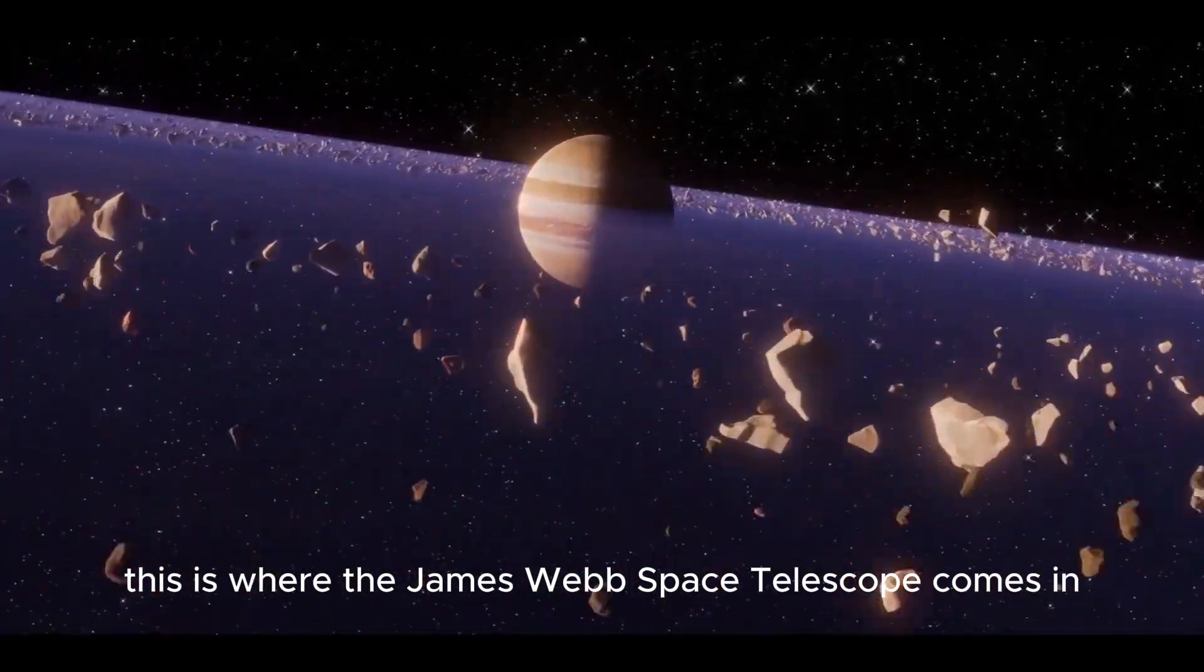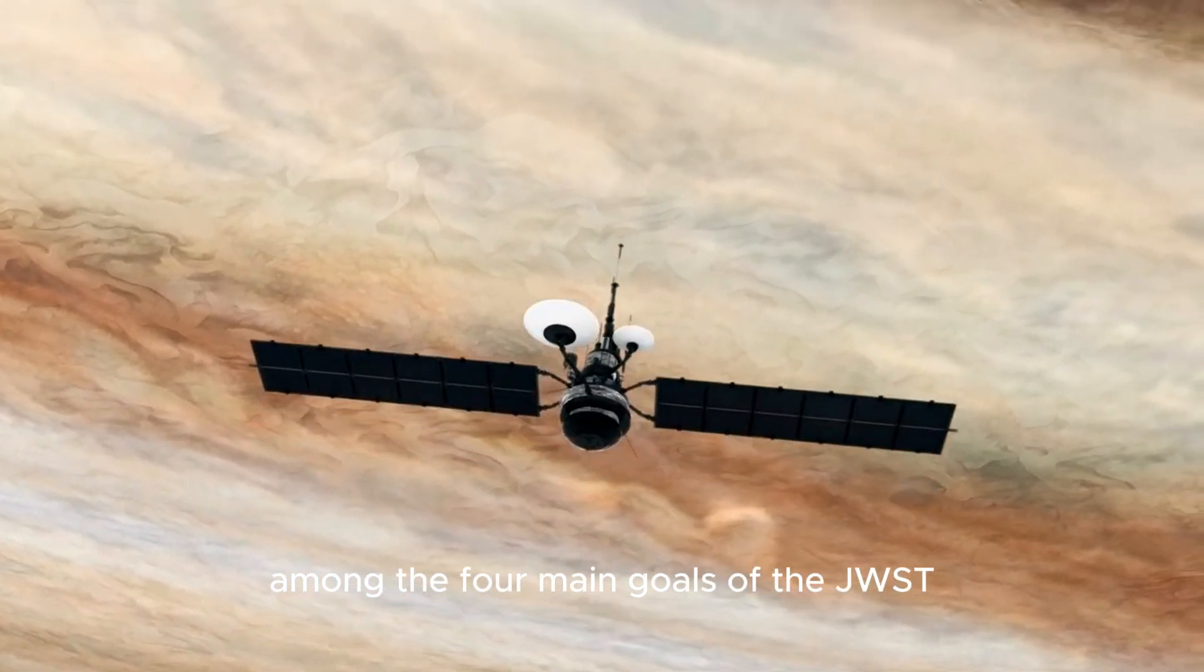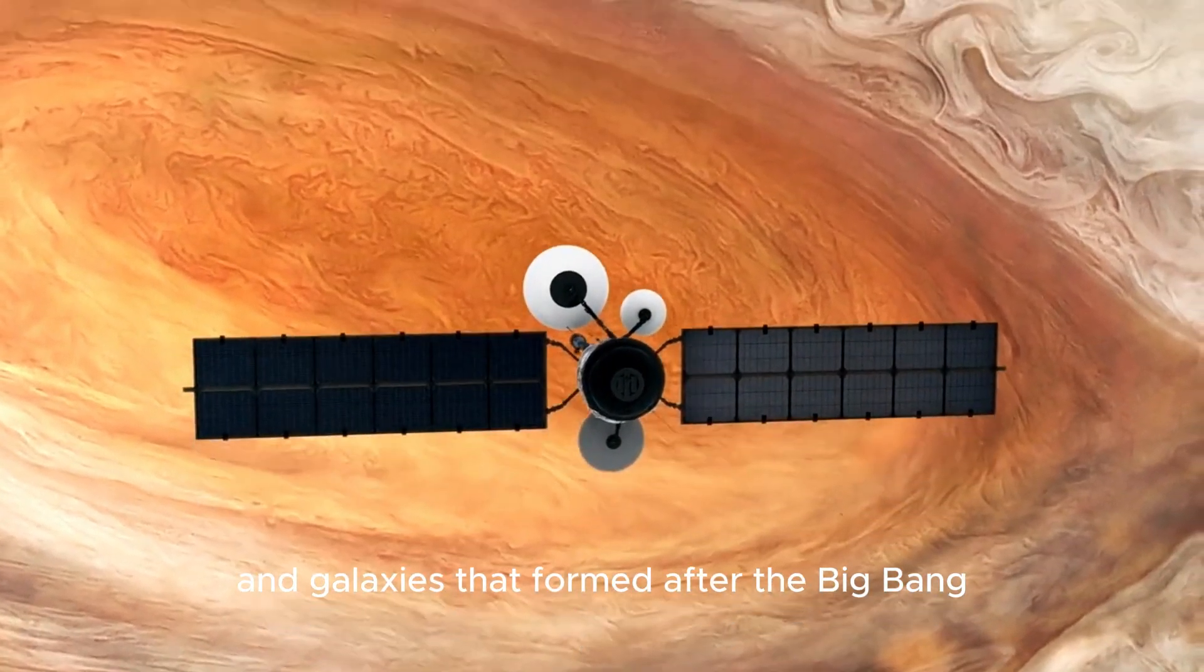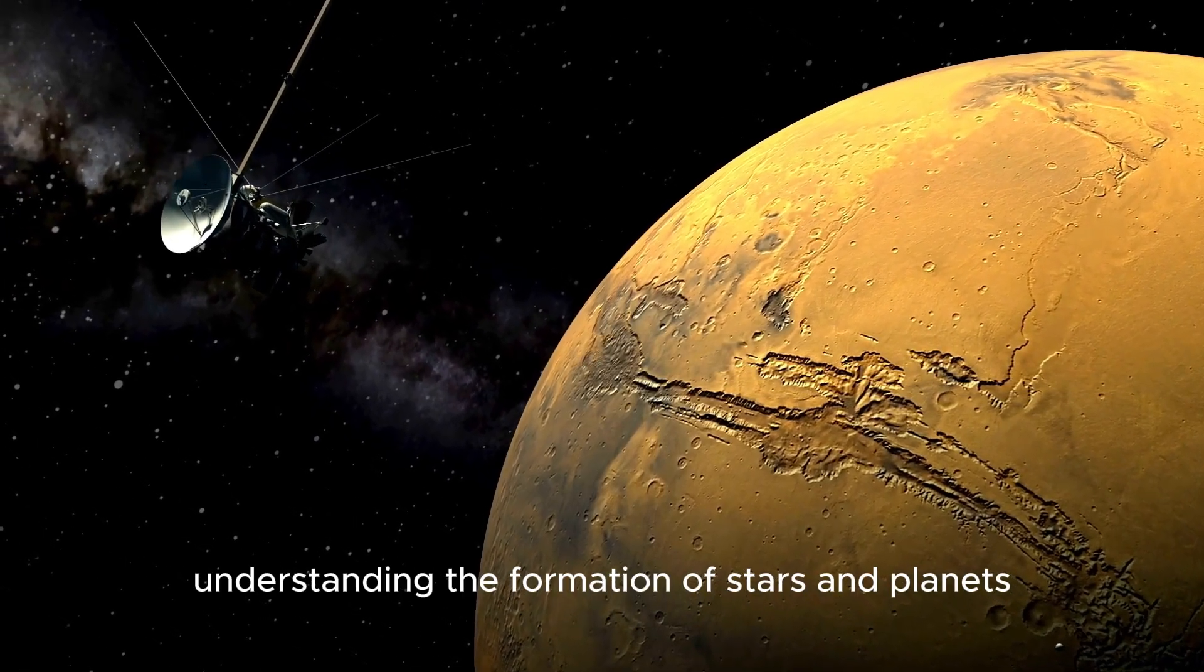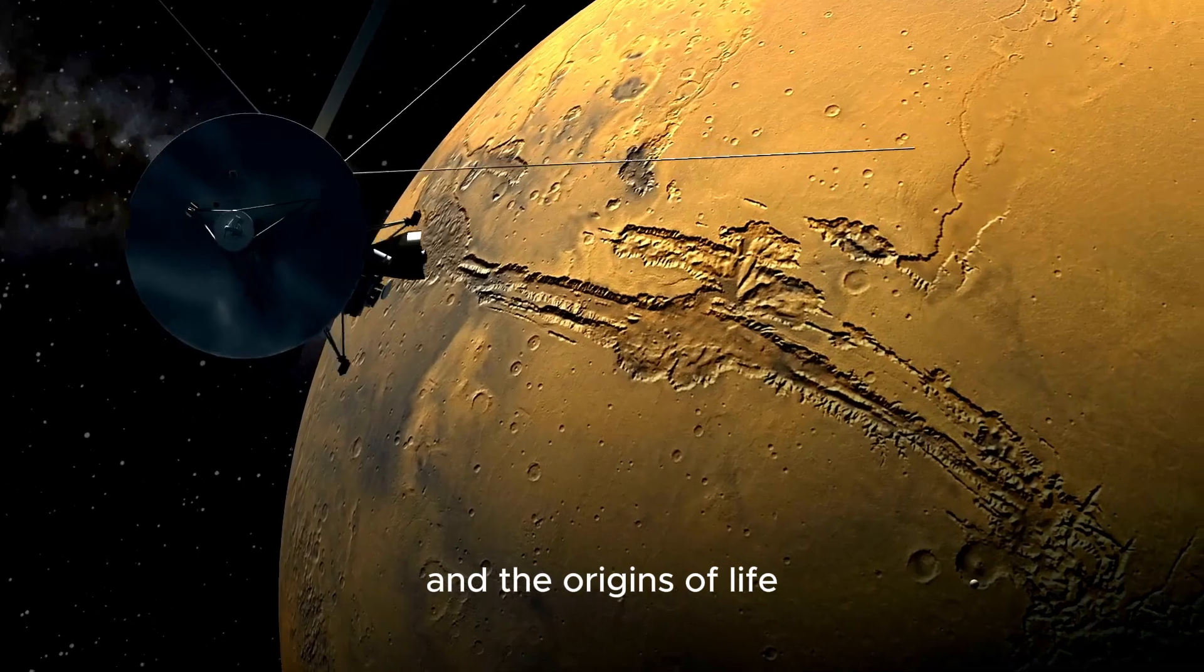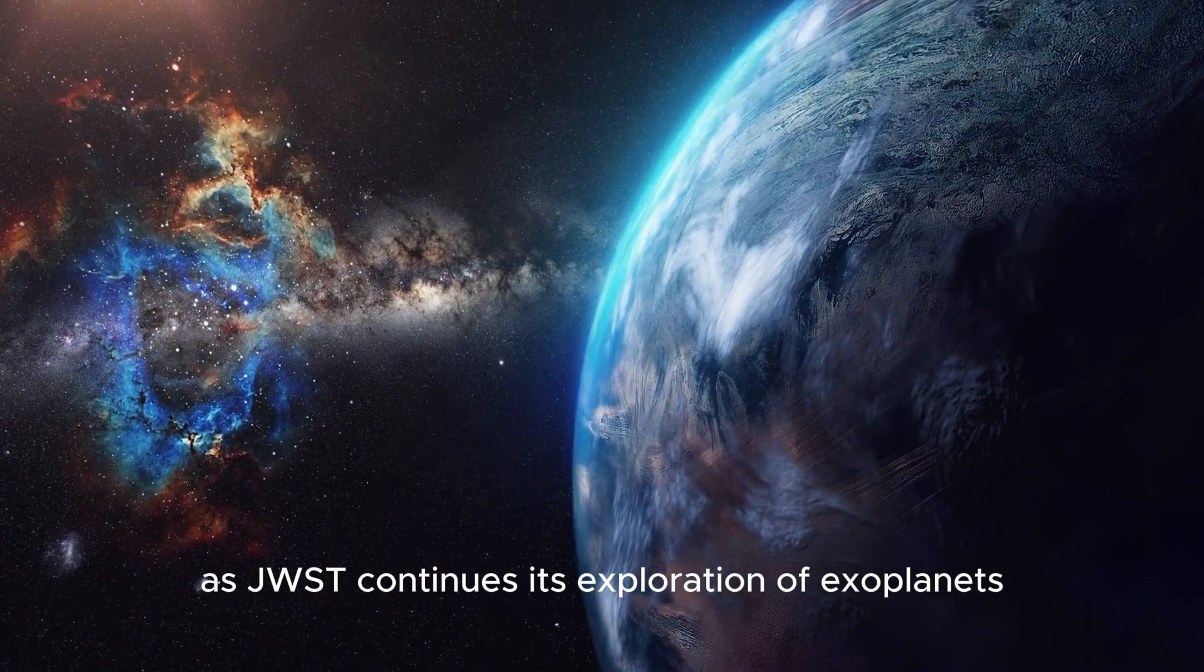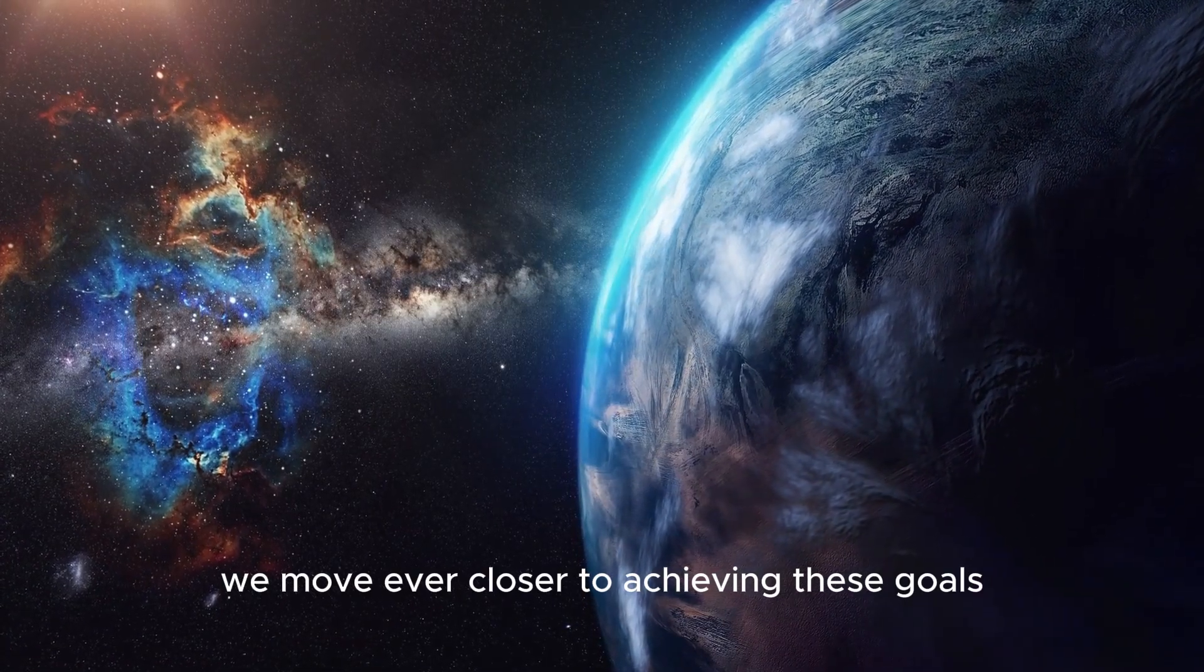This is where the James Webb Space Telescope comes in. Among the four main goals of the JWST are searching for lights from the first stars and galaxies that formed after the Big Bang, studying the formation and evolution of galaxies, understanding the formation of stars and planets, and investigating planetary systems and the origins of life. As JWST continues its exploration of exoplanets such as Proxima b, we move ever closer to achieving these goals.